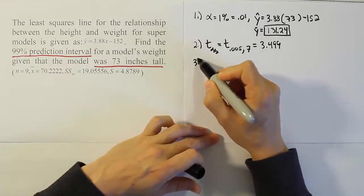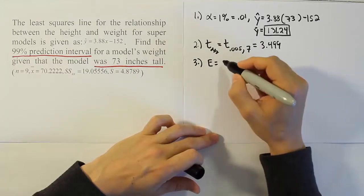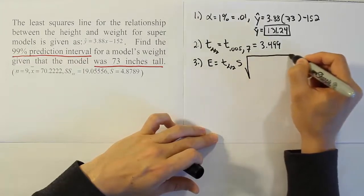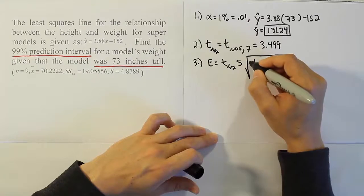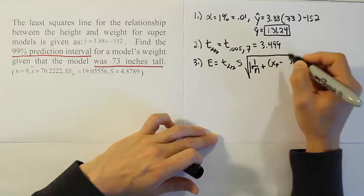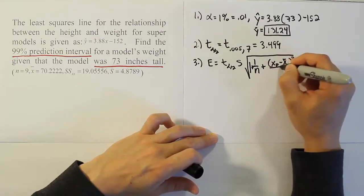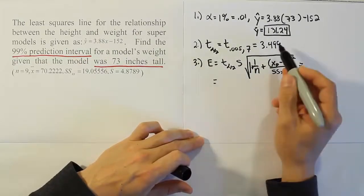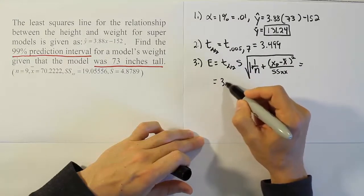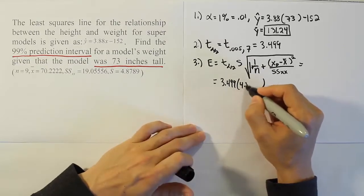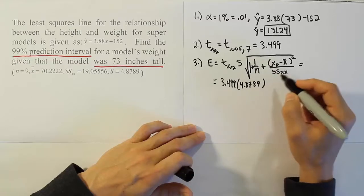Now in step 3 we want to calculate our margin of error. Our margin of error is the table value, t alpha divided by 2 times s times this following square root: 1 plus 1 over n plus the parentheses xp minus x bar quantity squared divided by sum of squares for x. So we want to plug in the values from the earlier part of the problem. Our t value is 3.499. The s value is given as 4.8789.